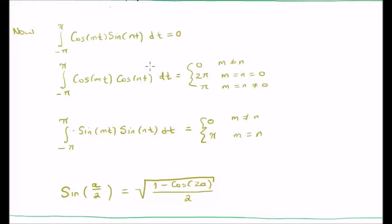Now, if we integrate the product of cosine mt and cosine nt on that same interval, we get three different results. When m is not equal to n, we get 0. When m is equal to n and both are equal to 0, we get twice pi.